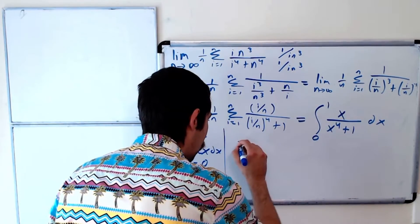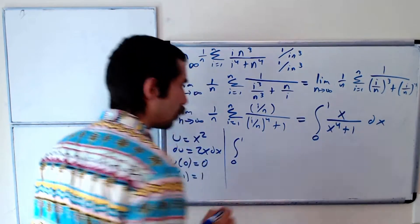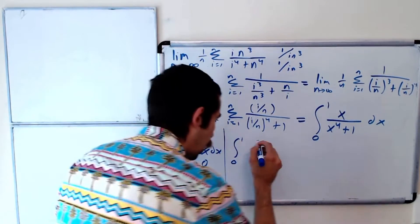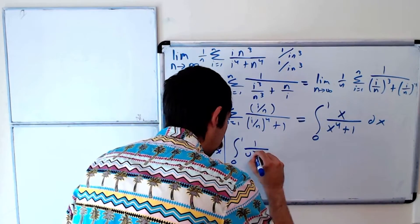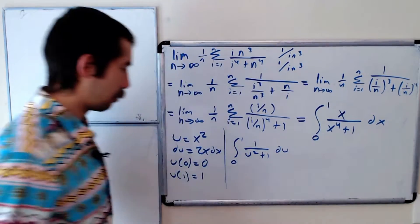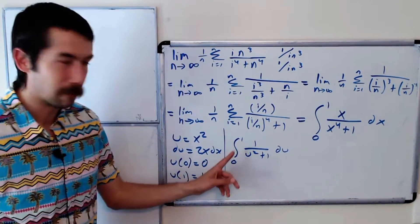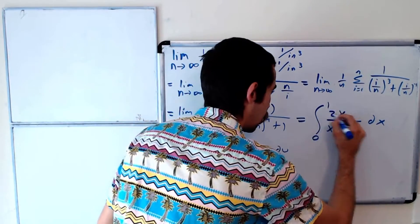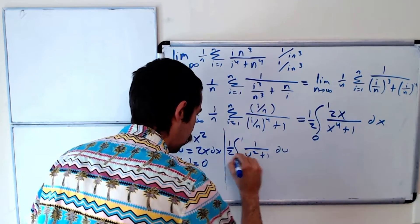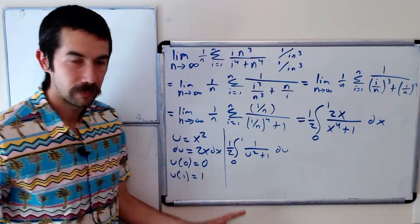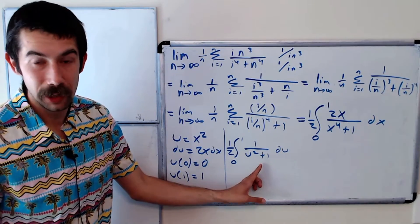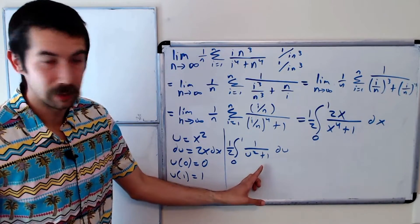This is equal to the integral from 0 to 1 of 1 over u² plus 1 du. And yes, there should be a one-half — so let's put a 2 inside and a one-half outside. There are a number of ways we could integrate this: one is a table of integrals, another is trig substitution.